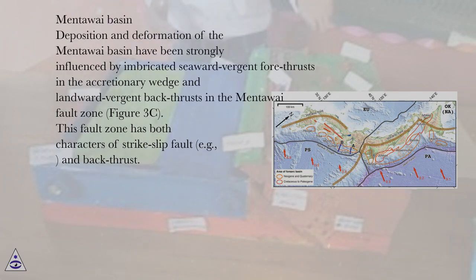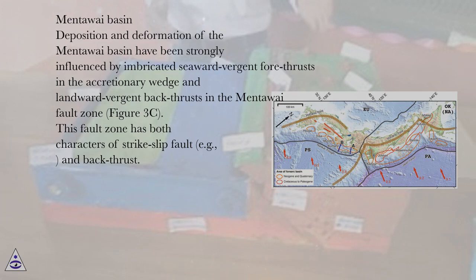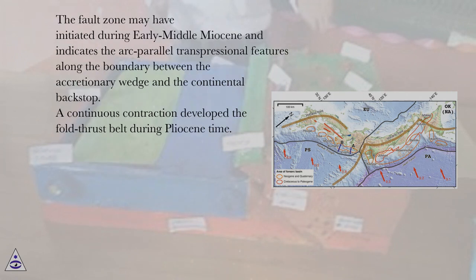Mentawai Basin. Deposition and deformation of the Mentawai Basin have been strongly influenced by imbricated seaward vergent forethrusts in the accretionary wedge and landward vergent backthrusts in the Mentawai fault zone, figure 3c. This fault zone has both characters of strike-slip fault and backthrust. The fault zone may have initiated during early-middle Miocene and indicates the arc-parallel transpressional features along the boundary between the accretionary wedge and the continental backstop.